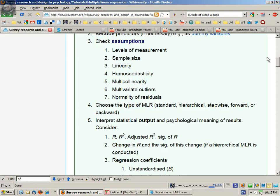We're talking about the general steps involved in doing a multiple linear regression. The next things to consider are the assumptions. We've already been talking about the levels of measurement for the independent and dependent variables.